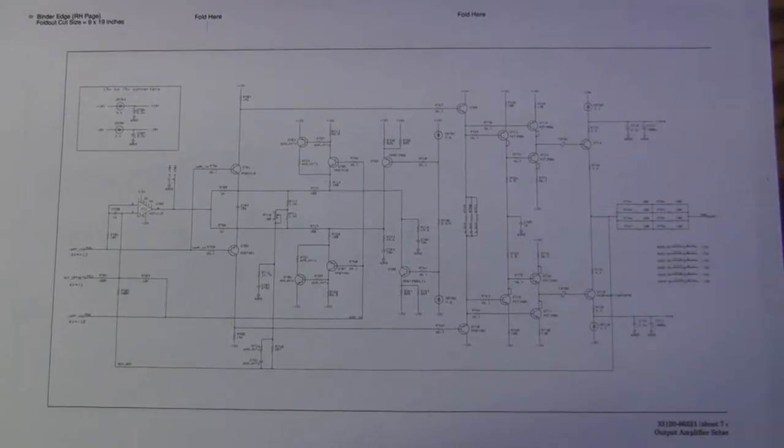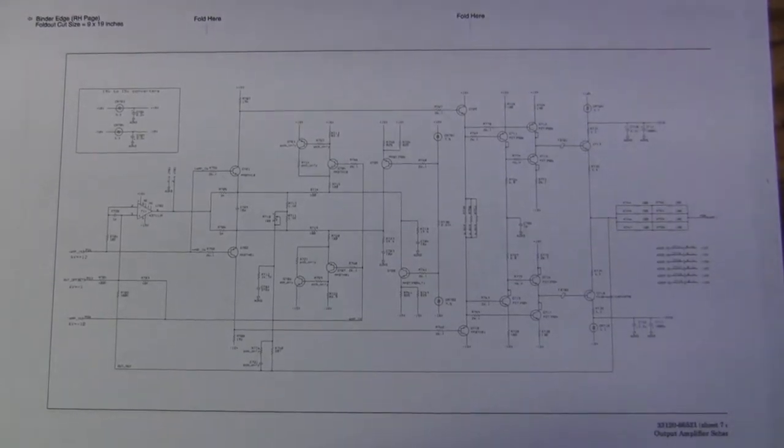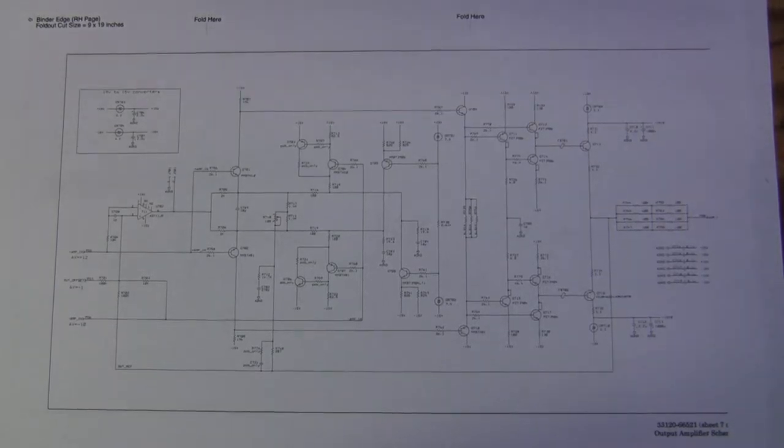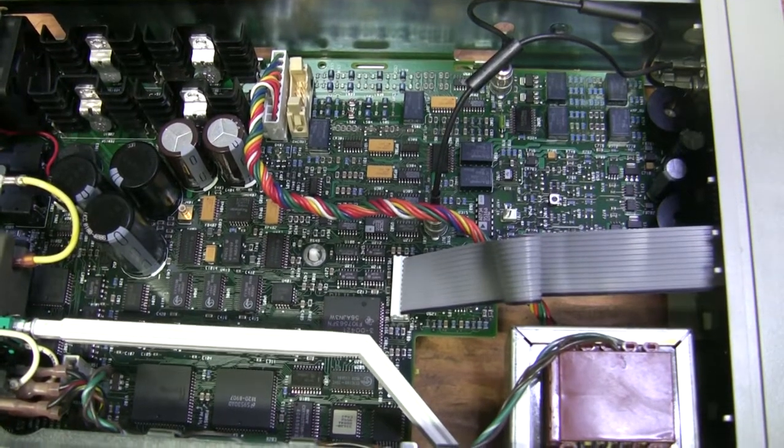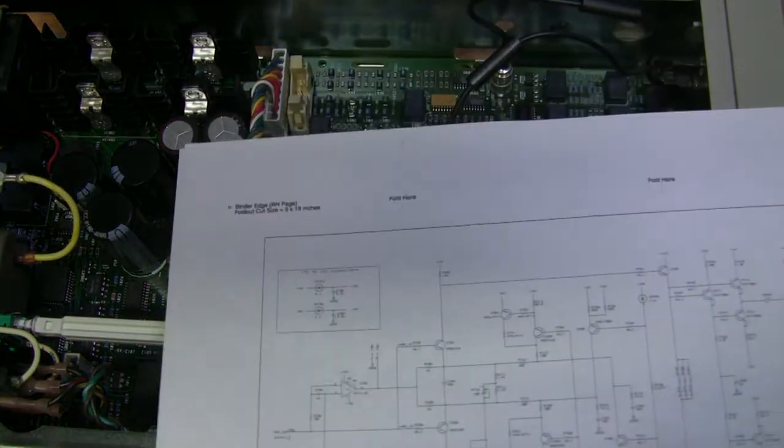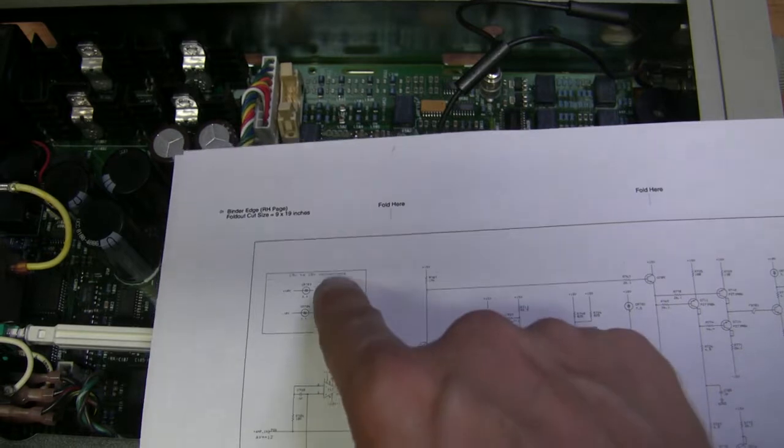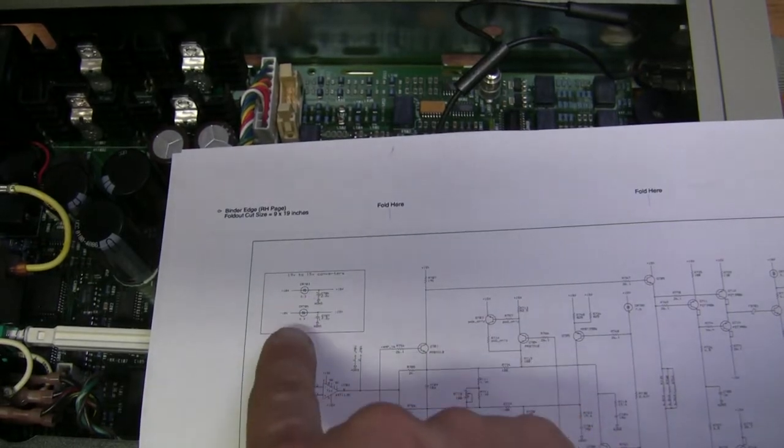So I suggest to open the thing up and start probing. Here I took the cover off and let's check the voltages first. I found these two zener diodes which have easy access.